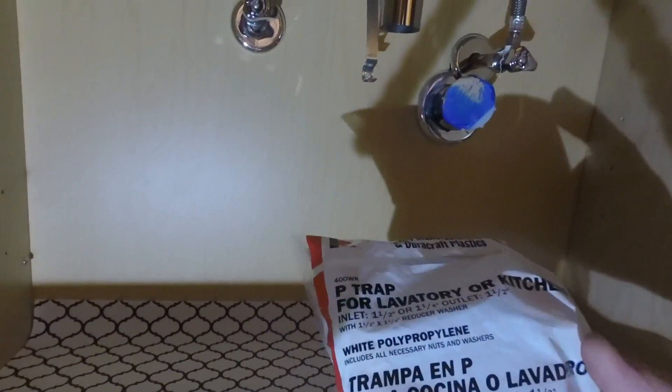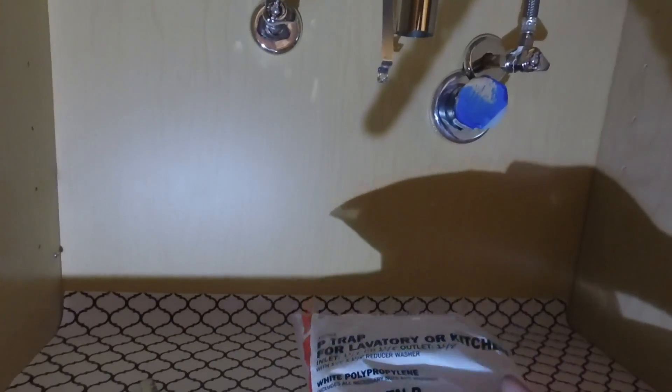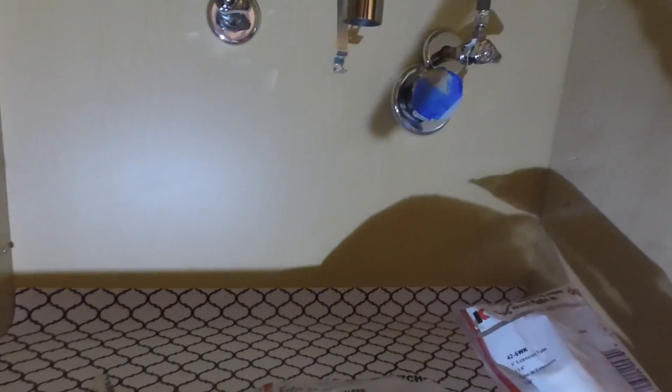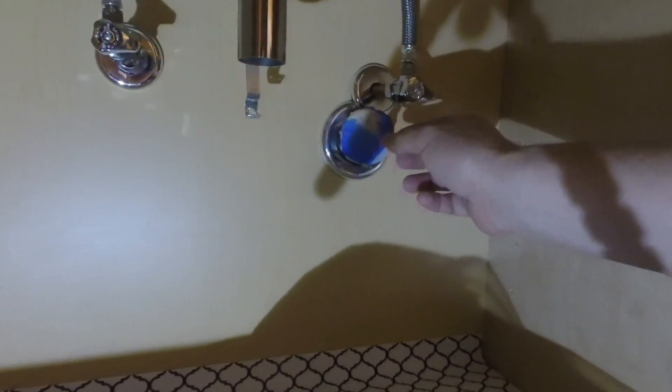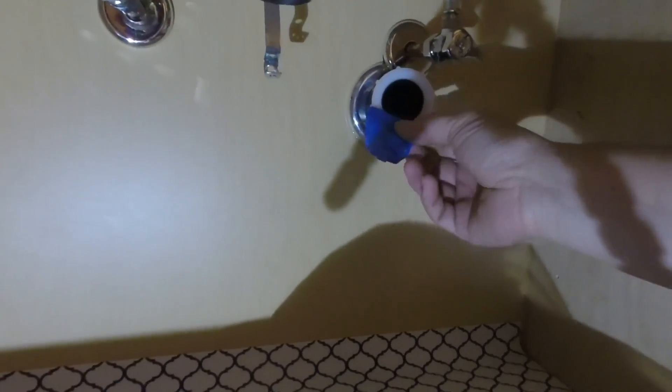But what they usually come with, these P-traps, they'll come with a reducing ring or a reducing washer, so that you're able to go from an inch and a quarter to an inch and a half. And that may be what your drain is. And that's what this drain is, an inch and a half.